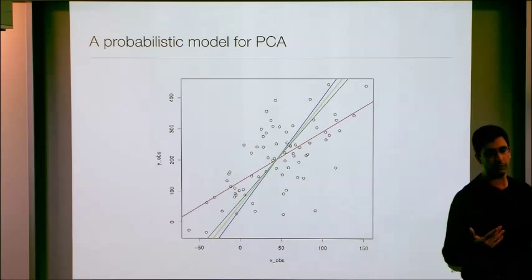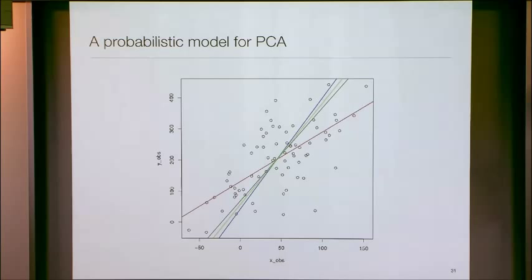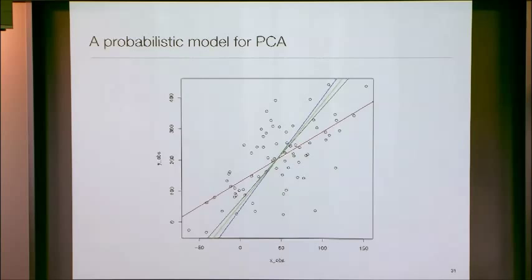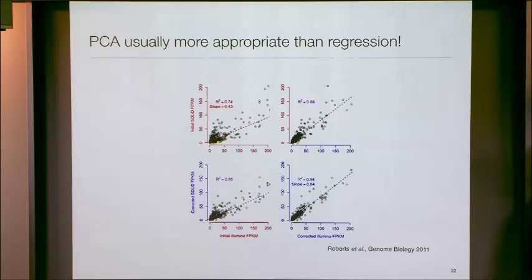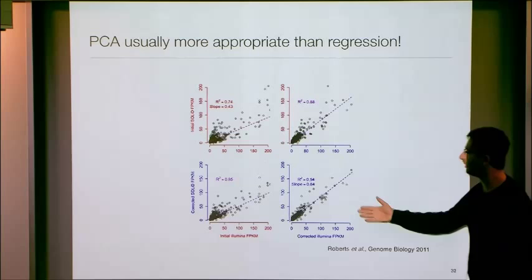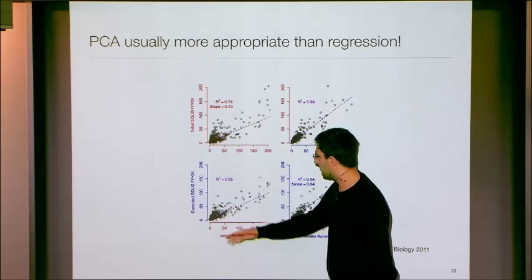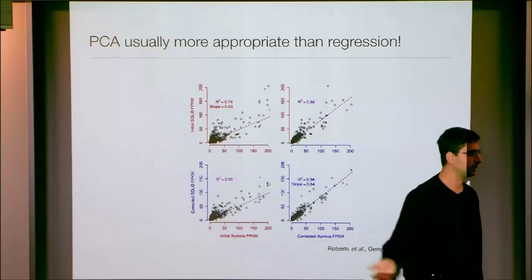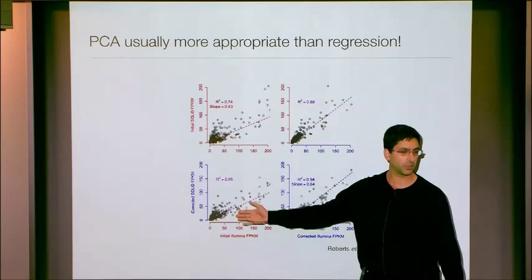I didn't come up with this way of thinking about PCA — it comes from Sam Roweis, and also Christopher Bishop, who have written about probabilistic PCA. There's a probabilistic framework where you see the PCA line not just as a projection maximizing variance, but as the statistically correct approach. In fact, everybody should probably be using PCA in genomics plots, because almost every data set has error in both x and y coordinates. In my own RNA-seq paper comparing Illumina versus SOLiD platforms, we regressed y versus x — which is wrong, because there's error in measurements of expression in both axes.